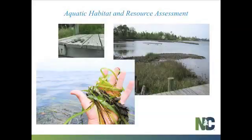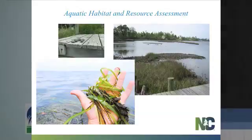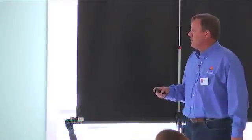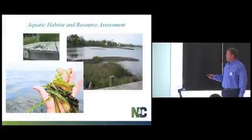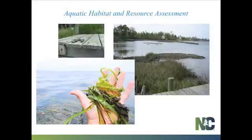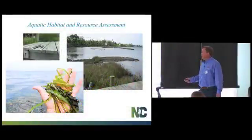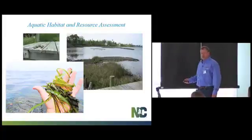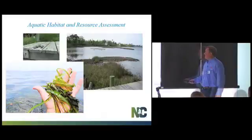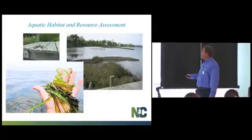When assessing whether a site is suitable for a living shoreline, one of the first things to look at is what habitats and aquatic resources are present. In designing a living shoreline, we don't want to negatively impact these habitats. In the Albemarle-Pamlico area, submerged aquatic vegetation is a very valuable habitat to consider, as are shellfish resources like oyster beds — we want to enhance that habitat, not bury it.